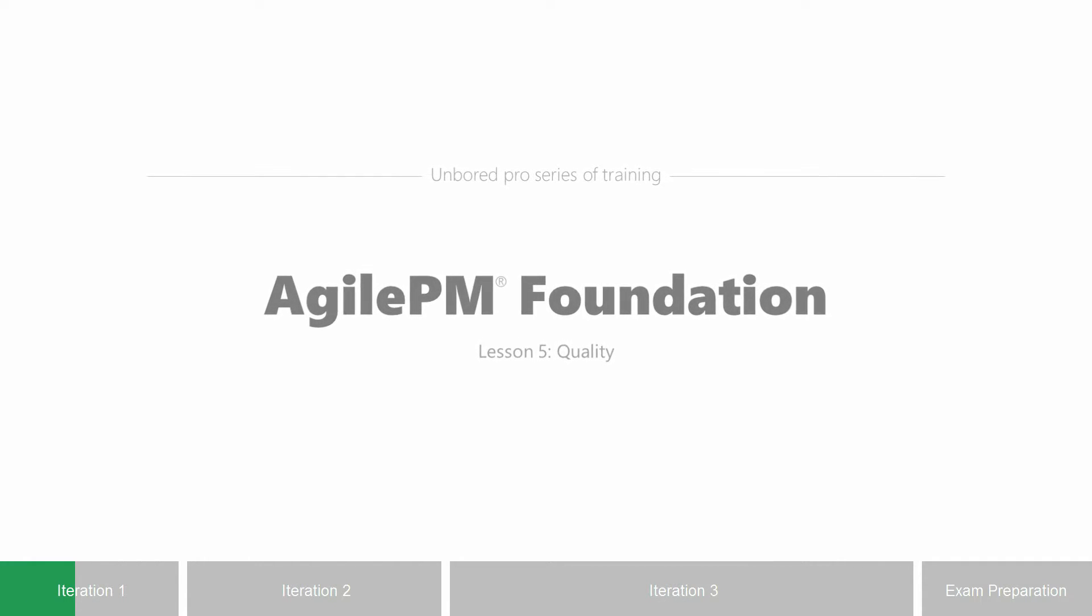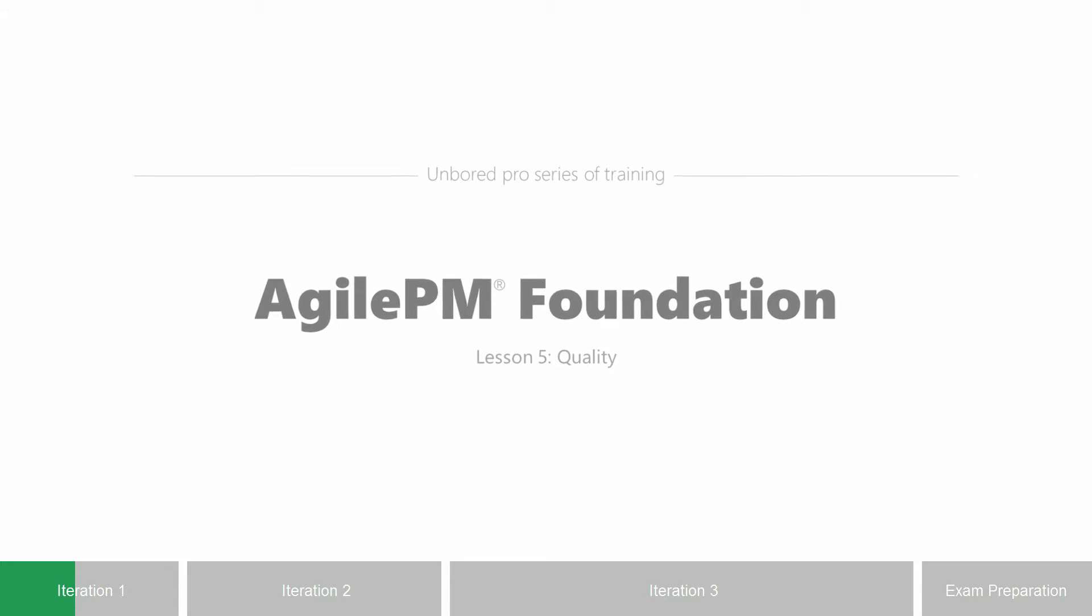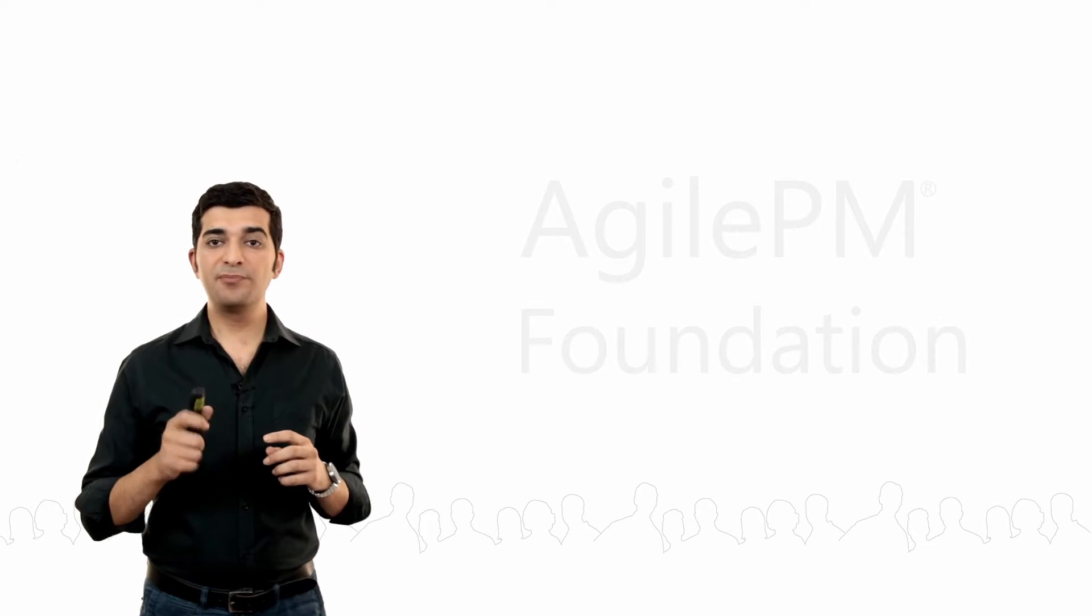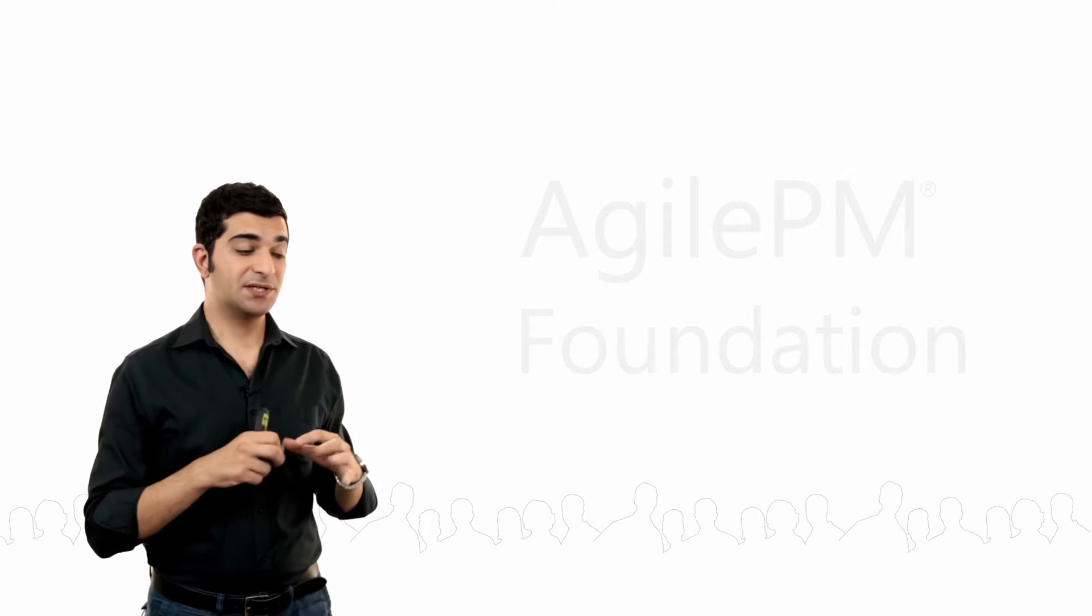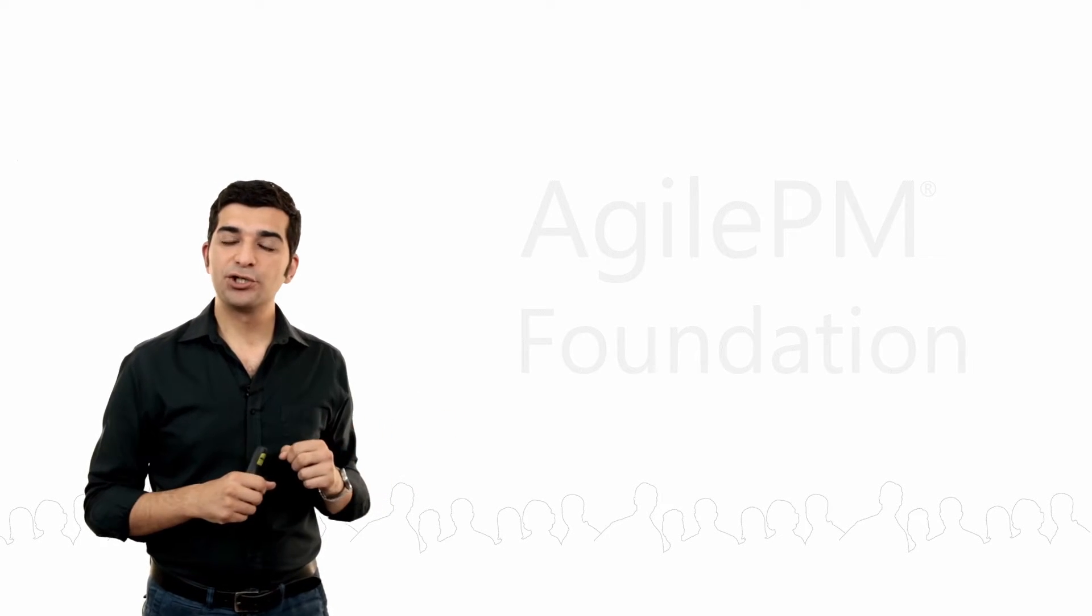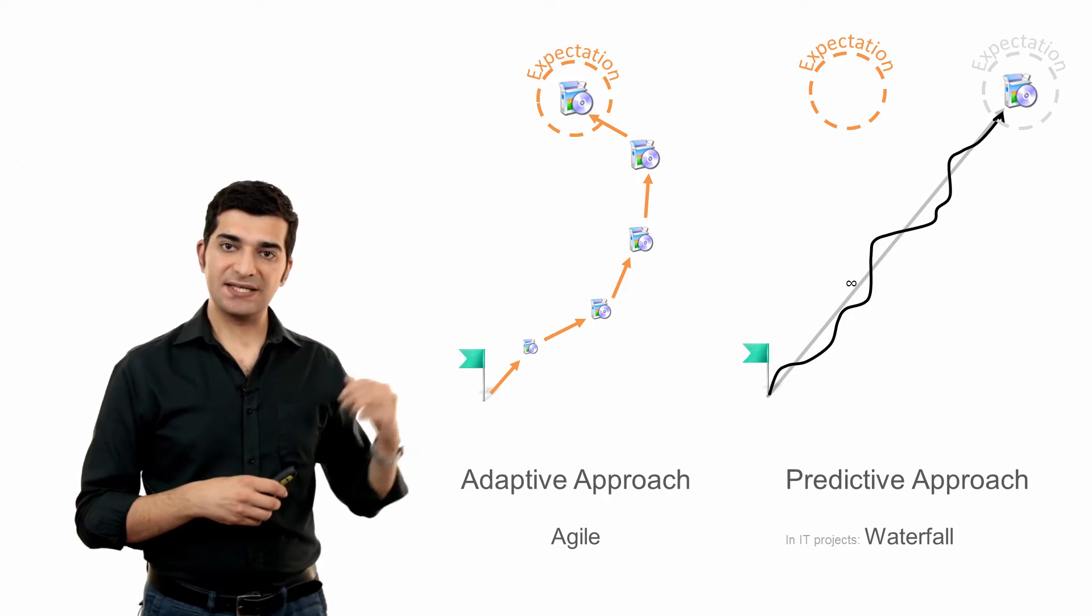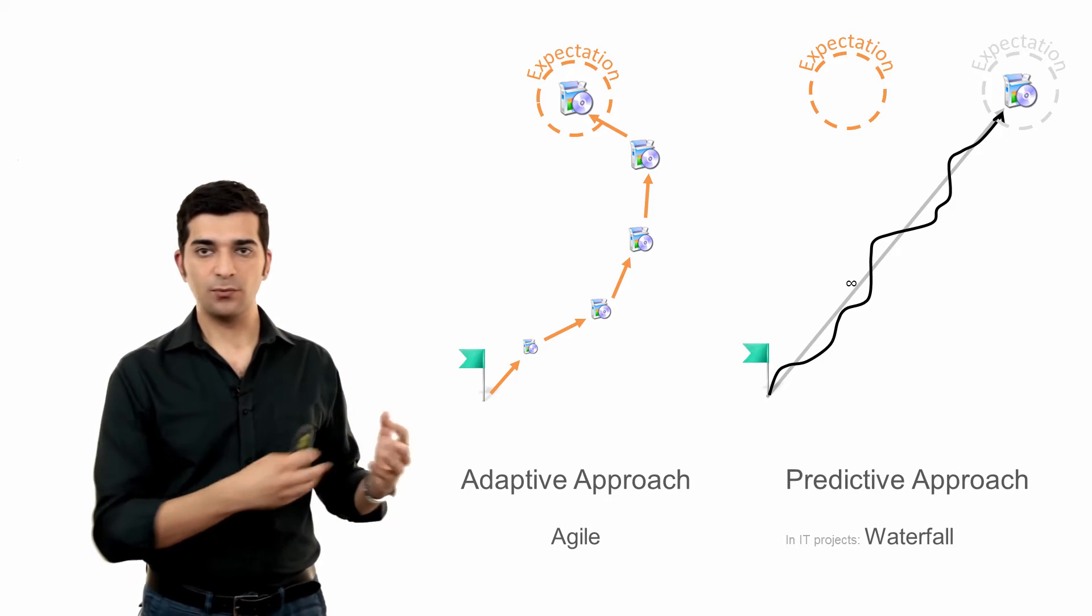Agile PM Foundation, Lesson 5, Quality. My previous question from you was about the different way of managing quality in these two development approaches, predictive and adaptive, Agile and Waterfall.